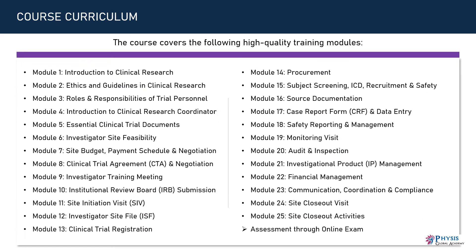The course covers the following high-quality training modules. Module 1: Introduction to Clinical Research. Module 2: Ethics and Guidelines in Clinical Research. Module 3: Roles and Responsibilities of Trial Personnel. Module 4: Introduction to Clinical Research Coordinator. Module 5: Essential Clinical Trial Documents. Module 6: Investigator Site Feasibility. Module 7: Site Budget, Payment Schedule, and Negotiation. Module 8: Clinical Trial Agreement and Negotiation.